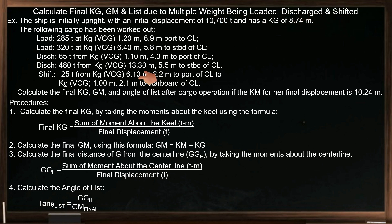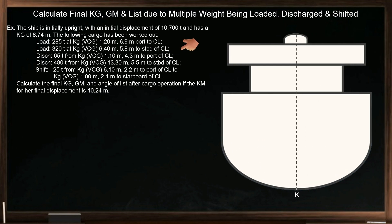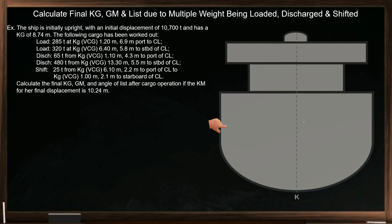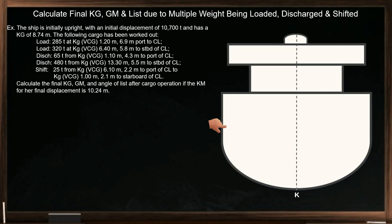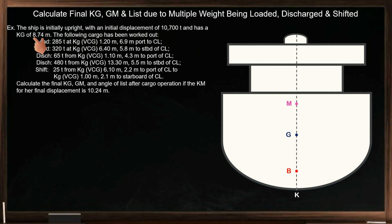We will follow the given procedures below. Let's have an overview of the given problem. Assuming this is the ship's transverse section, she is initially upright and in stable condition, where the ship's center of gravity is below the metacenter. Her initial displacement is 10,700 tons, with an initial KG of 8.74 meters.